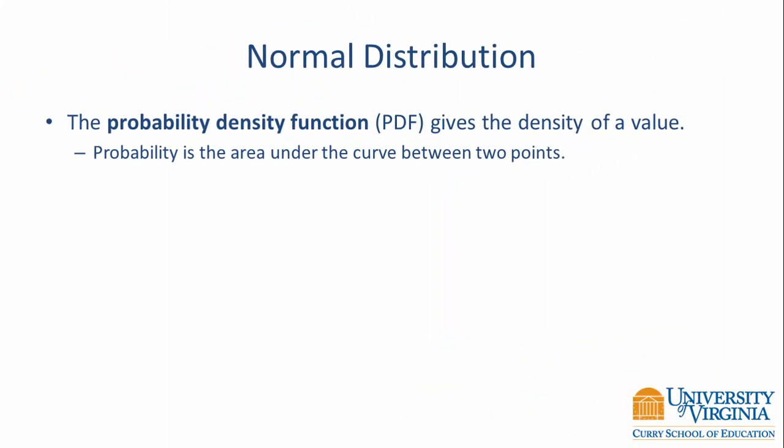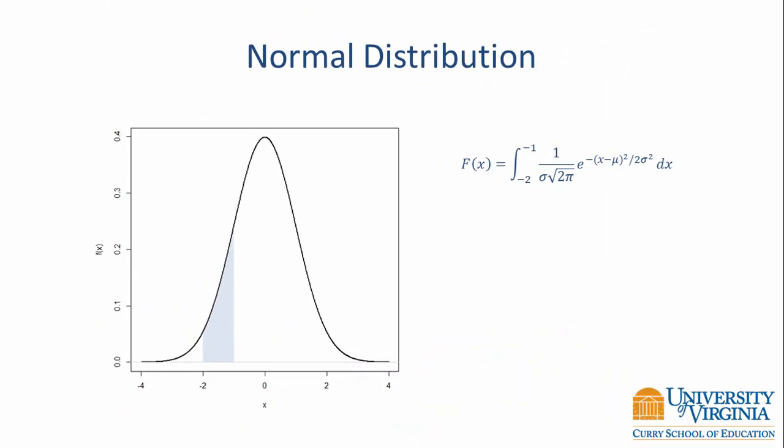The function that we use to plot the normal curve is referred to as the probability density function. This function gives the density of a value and in order to use it to compute probability, we have to look at the area between two points. For example, if we were interested in the probability that a random variable was between negative 2 and negative 1, we would compute the area between those two points and you can see it here shaded in blue. The probability that a random variable is between negative 1 and positive 1 is shown here. This image shows the probability that a random variable is greater than 1.65.